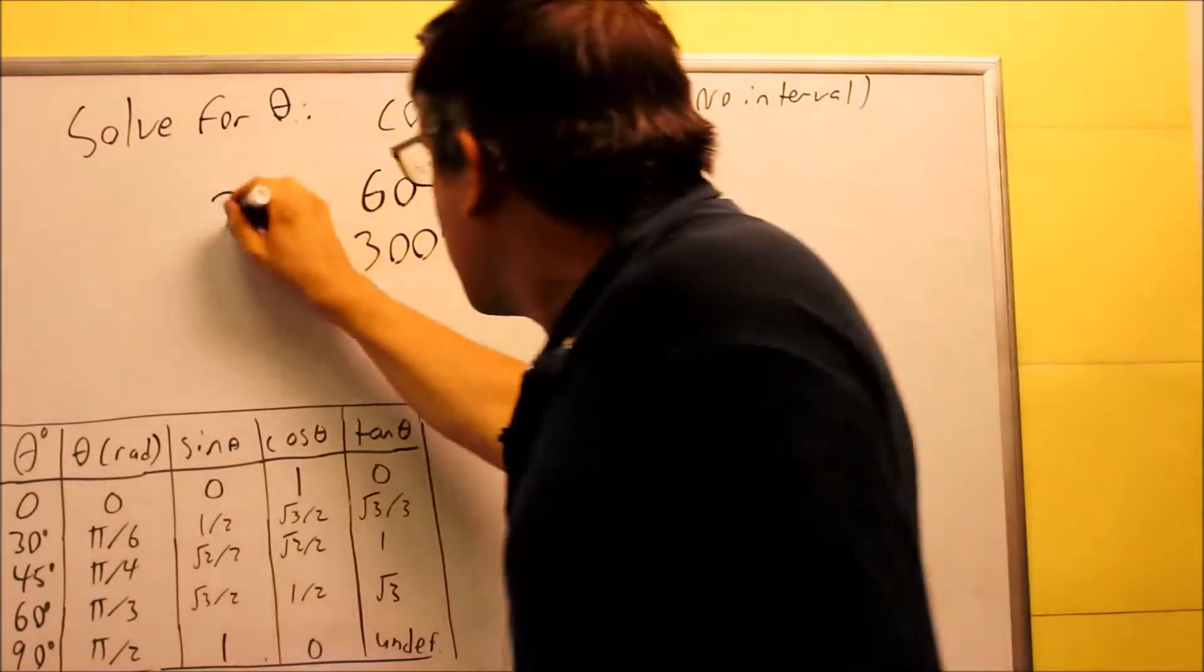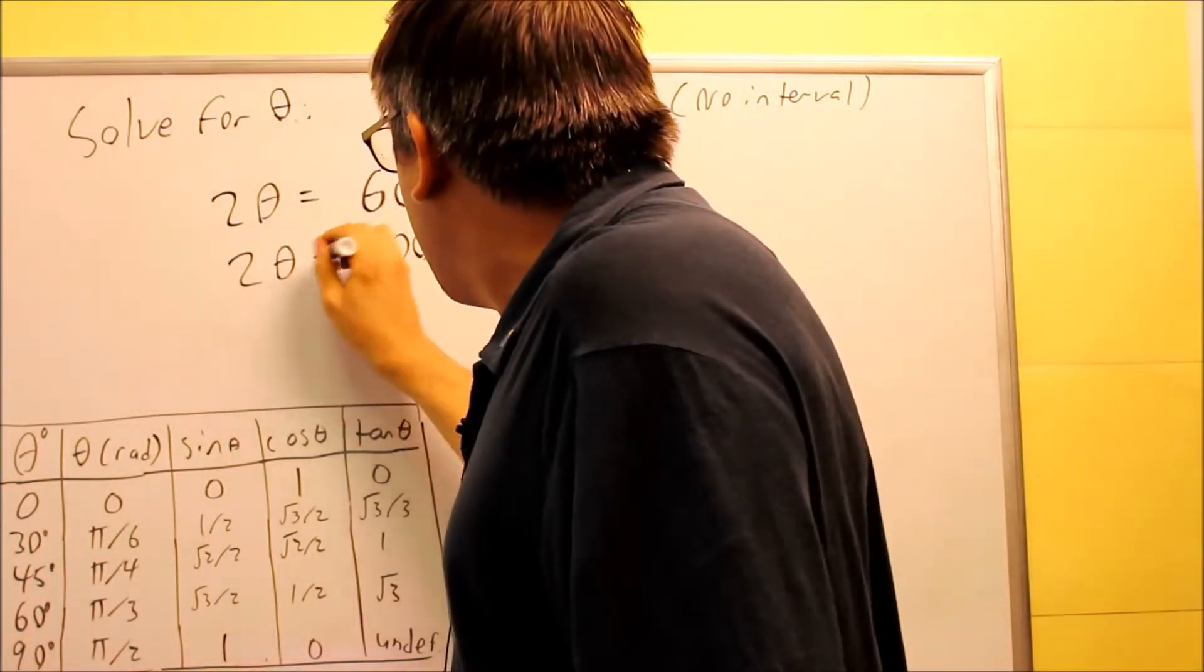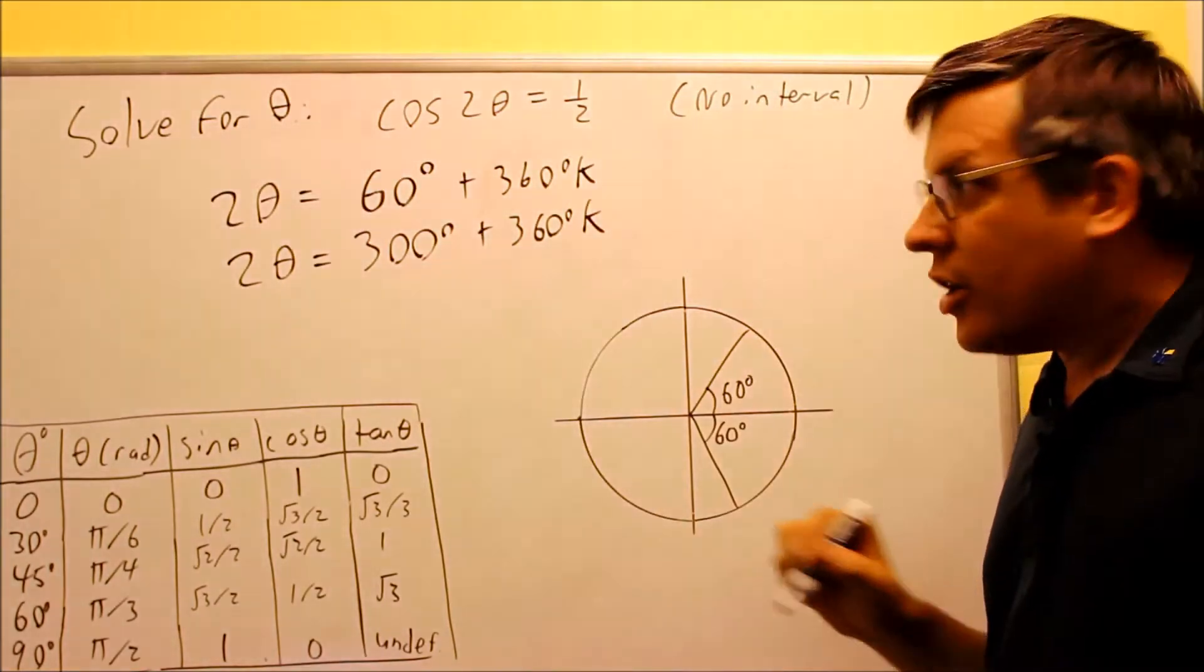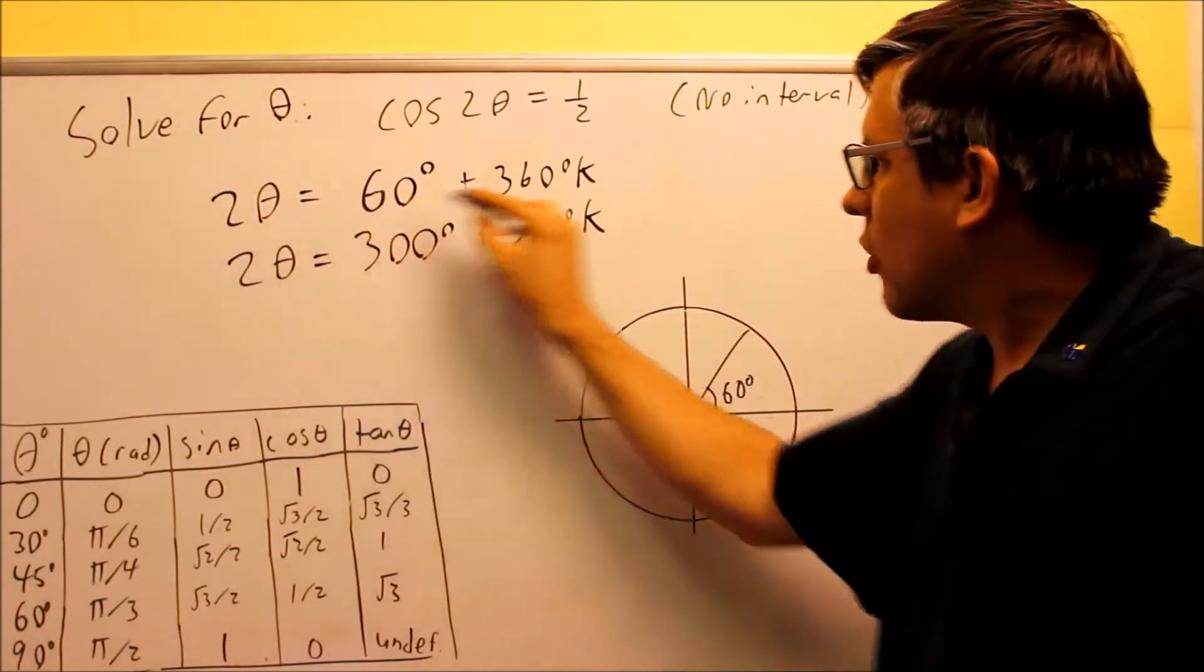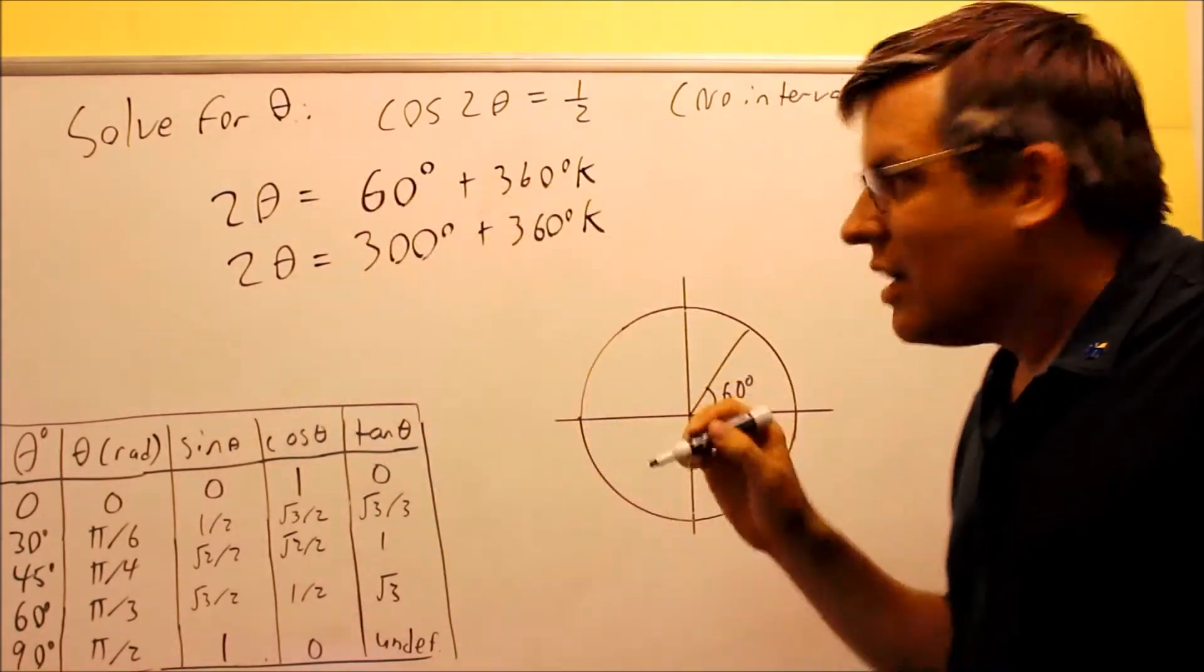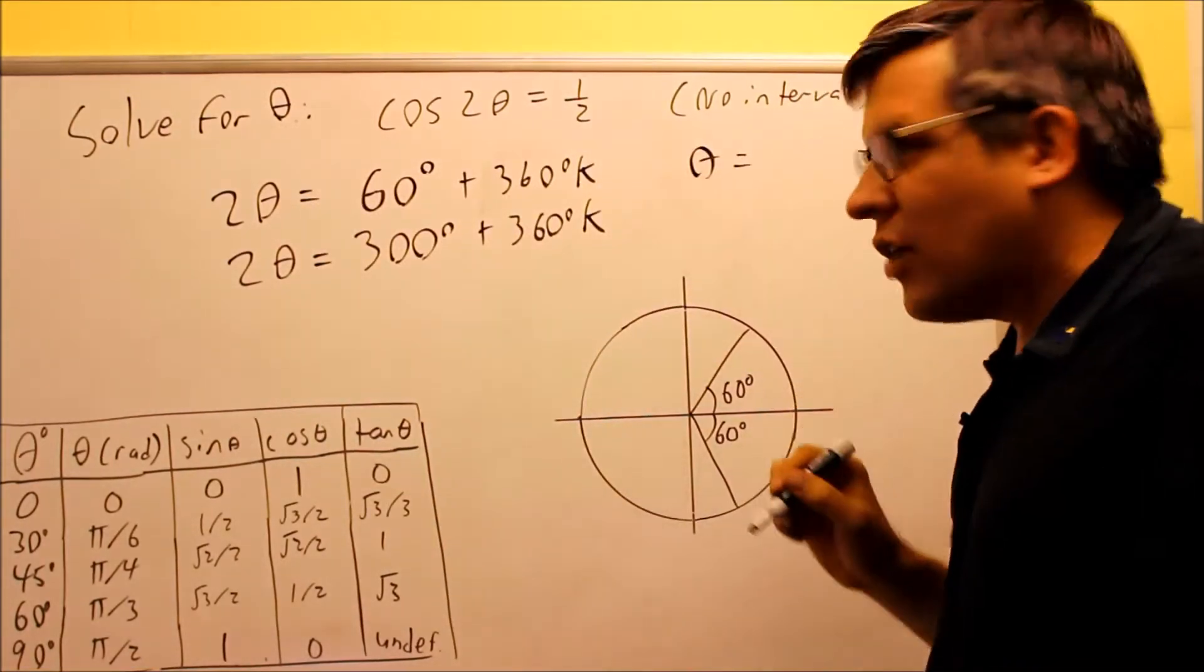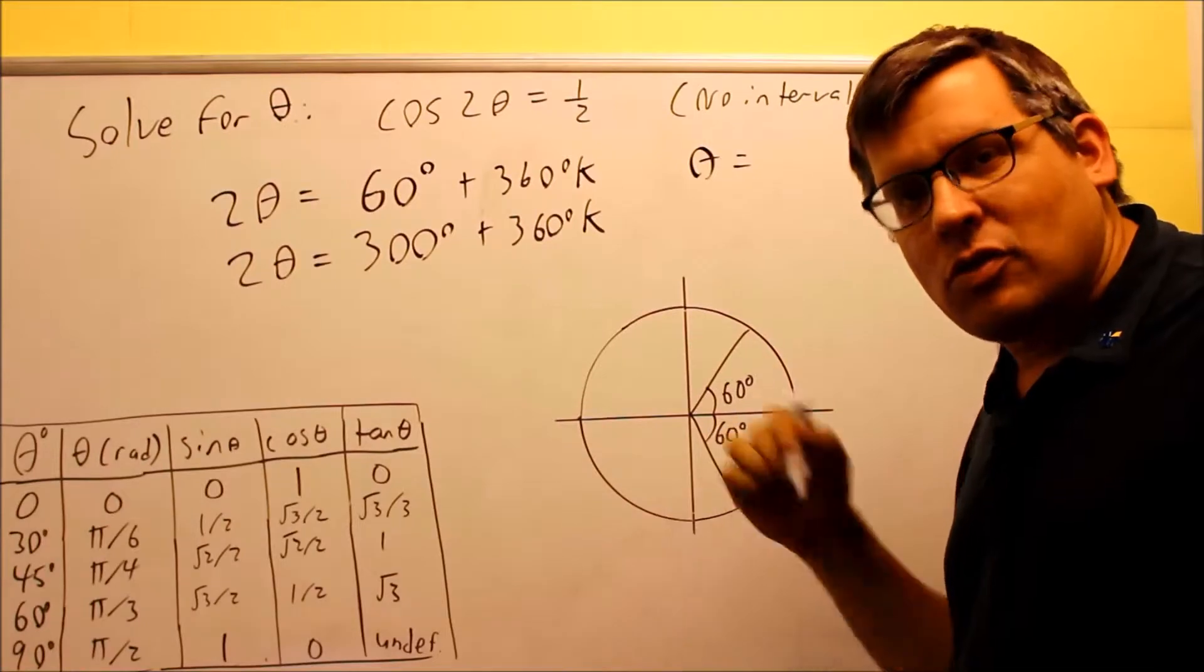So therefore, you want to actually set both of these equal to 2 theta because that's what's really inside there, and then we're going to divide the entire equation through by 2 to get the actual value for theta because we're solving for theta and not for 2 theta.